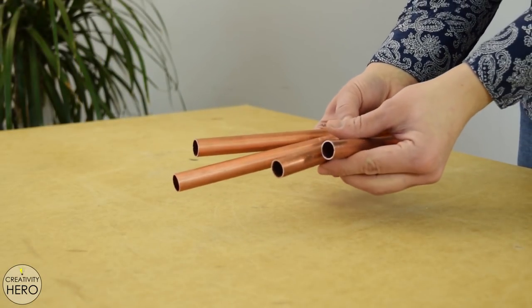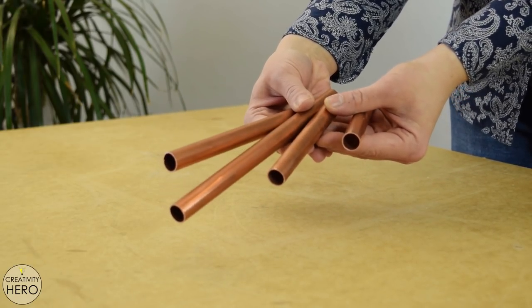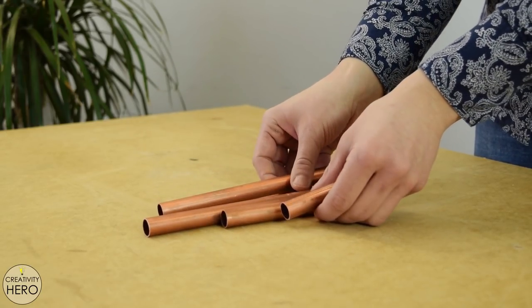The shorter copper pipes will support the smaller wooden piece in the middle and the longer copper pipes will support the larger wooden piece on the top.